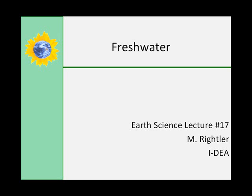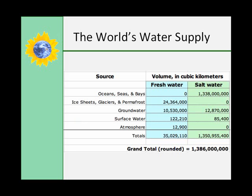The world has an estimated 1.3 billion cubic kilometers of water. The abundance of water on the planet Earth is readily seen on a globe by the percentage of the surface covered by oceans, which is 72 to 73%.